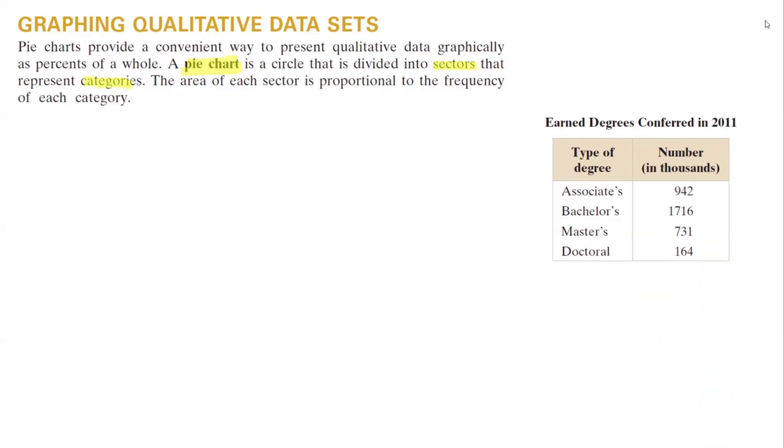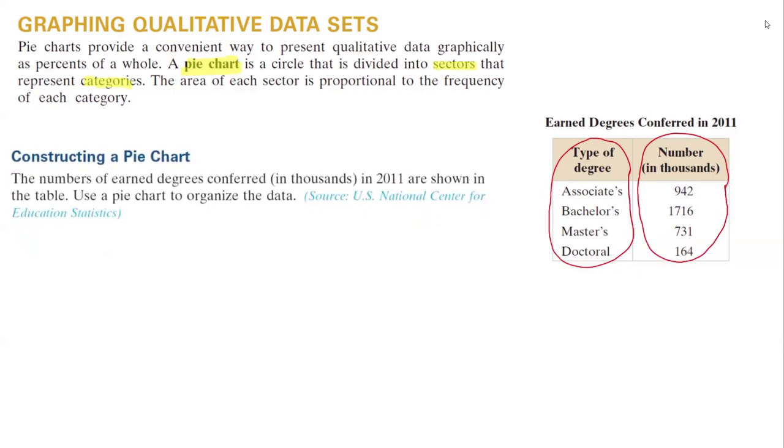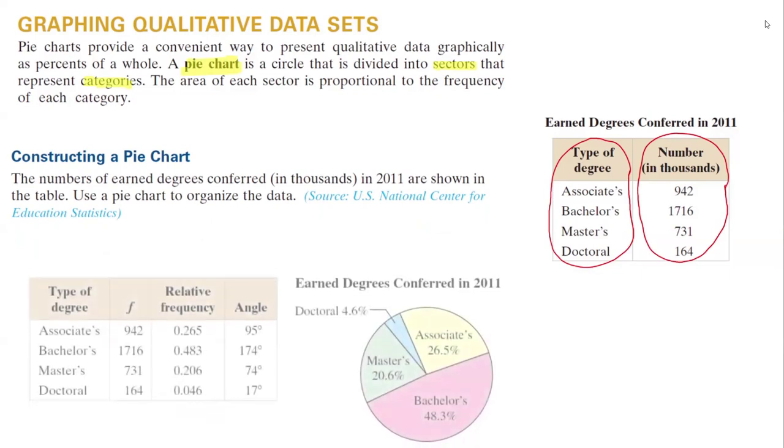On the left-hand side, you have the type of the data, which are categorical data in four categories: associate degree, bachelor, master, and doctorate. On the right-hand side, it shows the frequency. So to visualize the data using a pie chart, you need to construct a table with relative frequency.